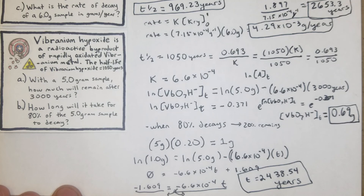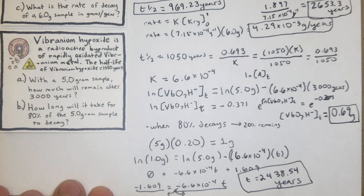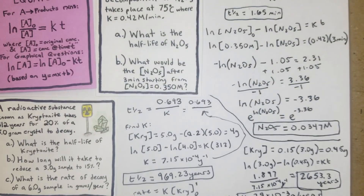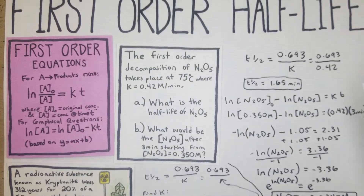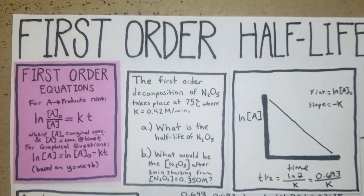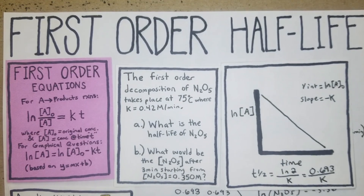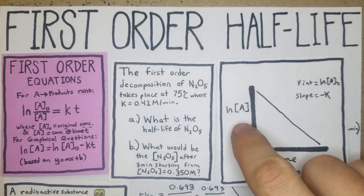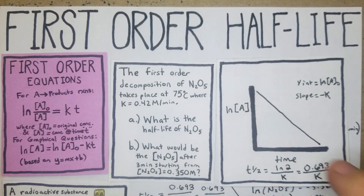We covered the two main problem types: solving for the half-life, and then using the half-life to find k, and then using k to find concentrations or times. That's it for first-order half-life calculations. As a recap on the graph: when graphing a first-order reaction, the y-axis is the natural log of the concentration of A — as opposed to zero-order and second-order reactions which plot differently. Hopefully this helps.